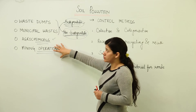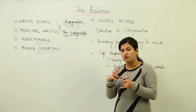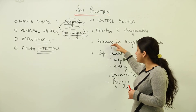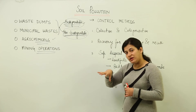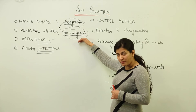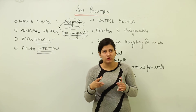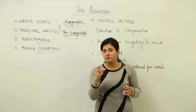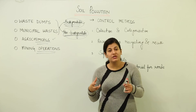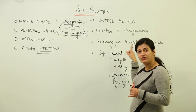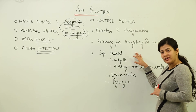Now let's look at control methods for soil pollution. There are three steps to be carried out. First, collect the waste and categorize it as biodegradable or non-biodegradable. Second, recover whatever can be reused from that waste — for example, plastic bottles have a recycling sign showing they can be recovered, and newspapers get picked up and recycled. This is the recovery and recycling of solid waste. Third, whatever cannot be recycled or reused must be disposed of safely.